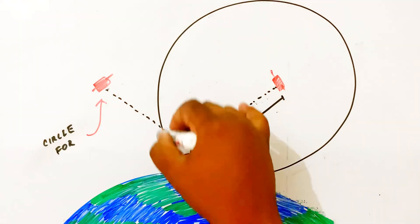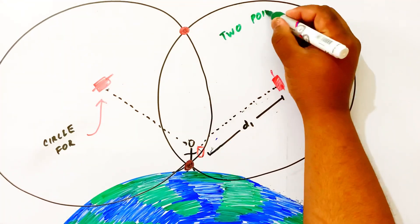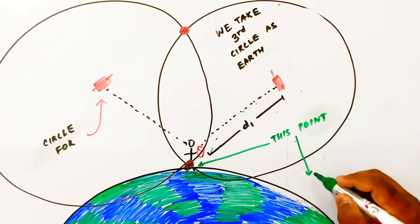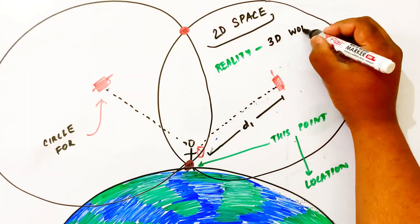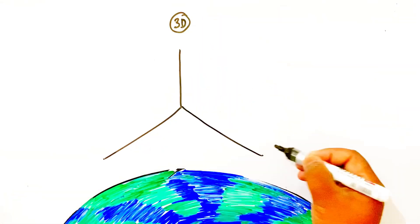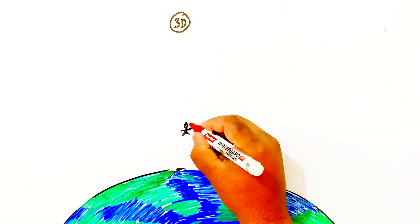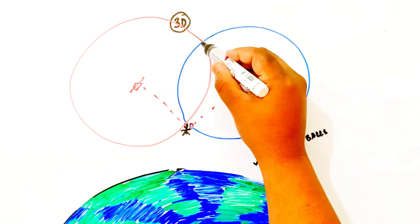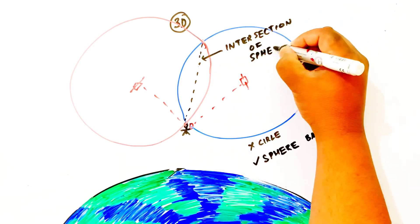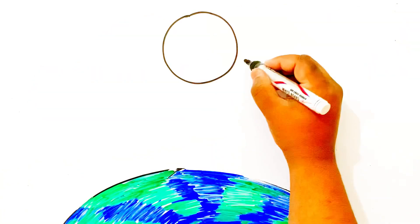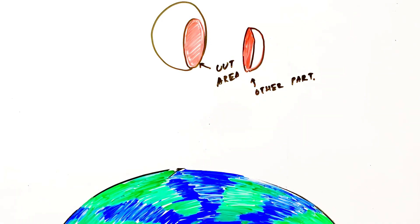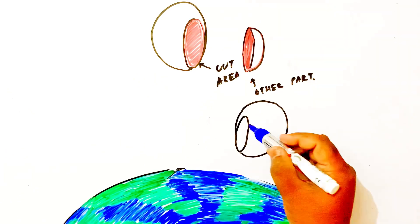We can see that the radius D1 is from the satellite to the center. We create a circle — a sphere — at the device's location. In 3D, on X, Y, and Z directions, we have a sphere. Similarly, we have a second radius and a second sphere. Another sphere will be drawn, and where these spheres intersect, we get a circle.